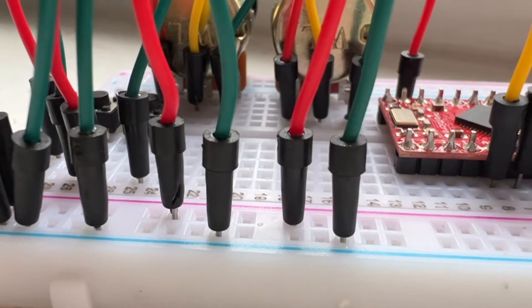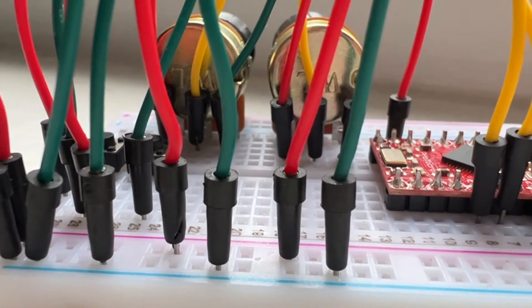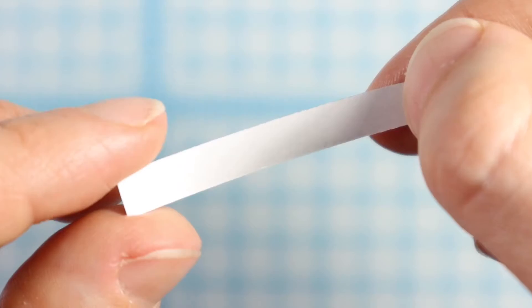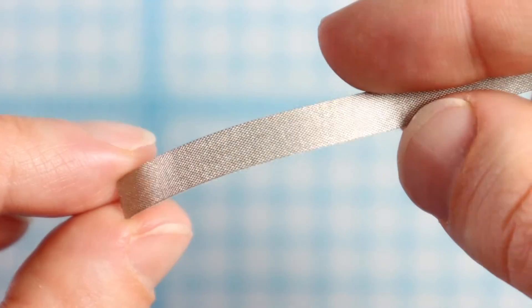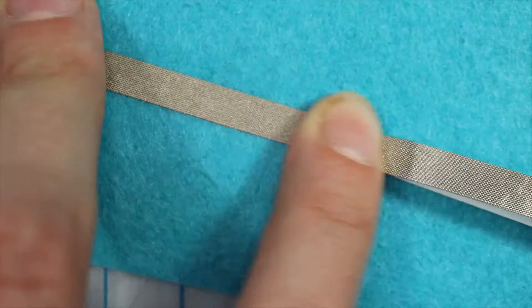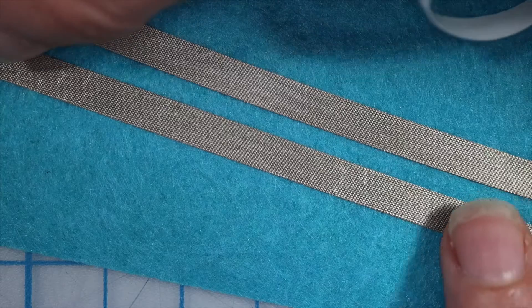Most circuits use metal wires to connect components. For wearables, we replace the wire with more flexible materials. One option is Maker Tape, a conductive tape that's made of woven metal fabric with conductive adhesive on the bottom. It's flexible and flat and can be easily stuck to fabric or felt.